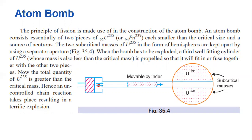The principle of fission is made use of in the construction of the atom bomb. An atom bomb consists essentially of two pieces of either uranium-235 or plutonium-239, each smaller than the critical size, and a source of neutrons. The two subcritical masses of uranium-235 in the form of hemispheres are kept apart by a separator. When the bomb has to be exploded, a third fitting cylinder of uranium-235, whose mass is also less than the critical mass, is propelled so that it fuses together with the other two pieces. The total quantity of uranium-235 then becomes greater than the critical mass, and an uncontrolled chain reaction takes place resulting in a terrific explosion.